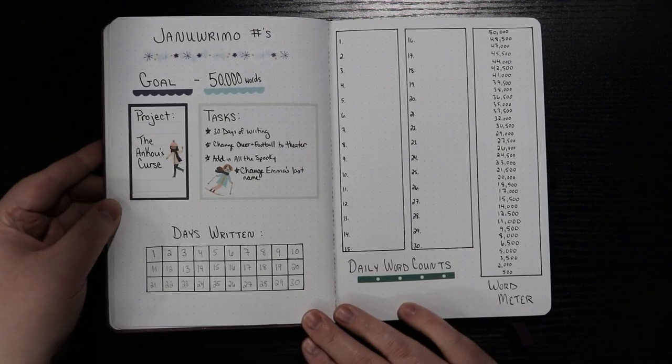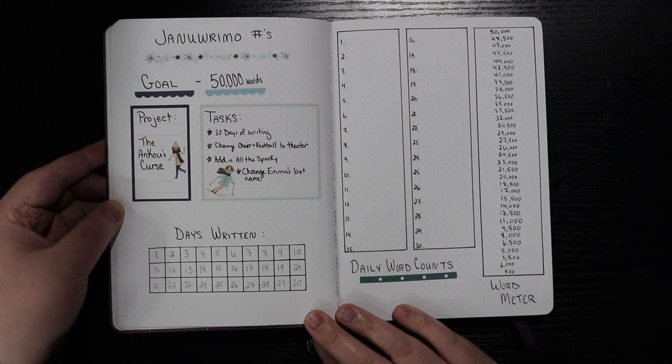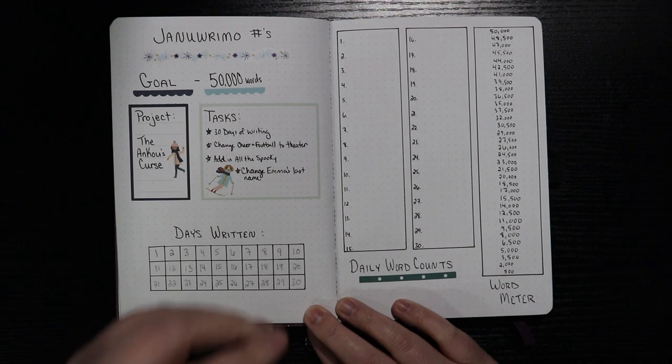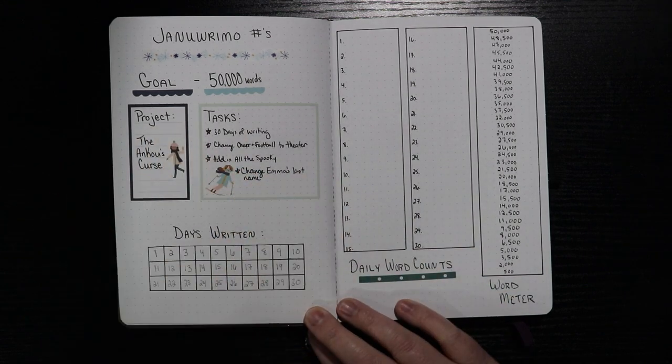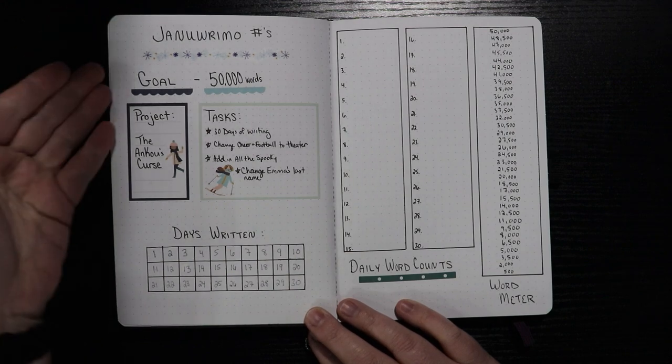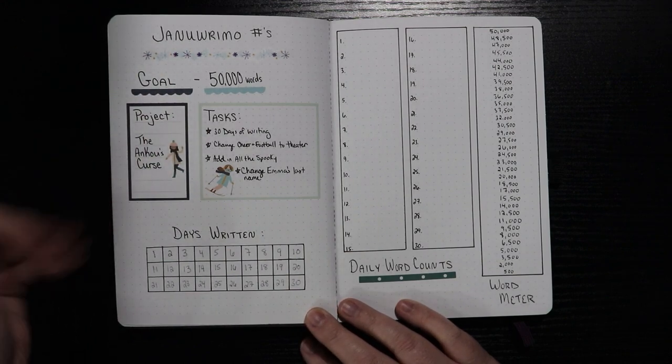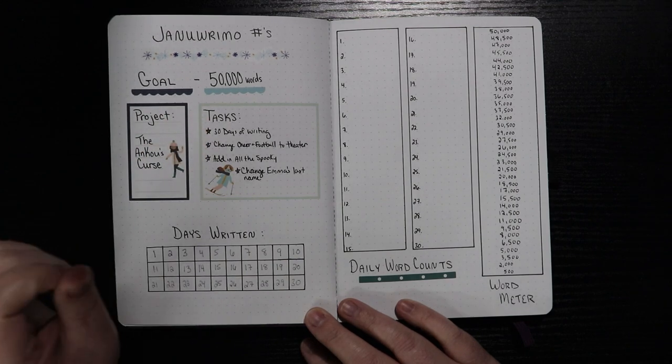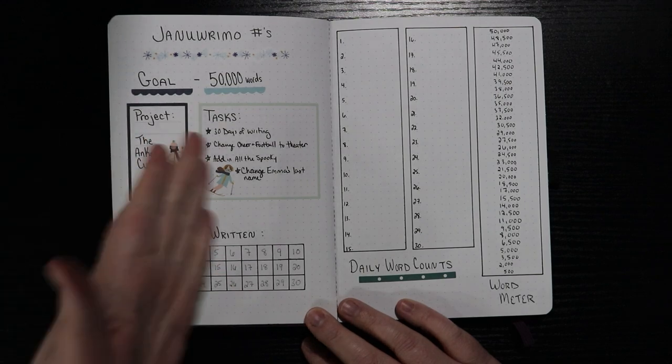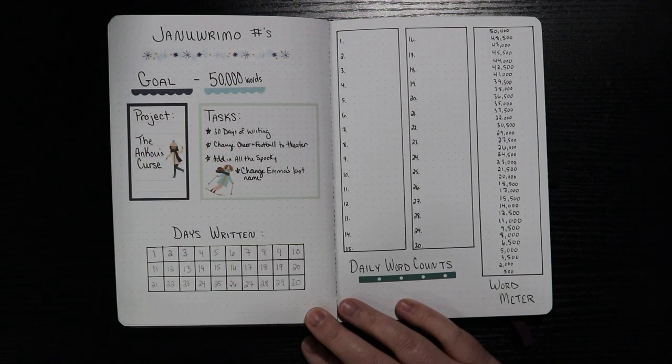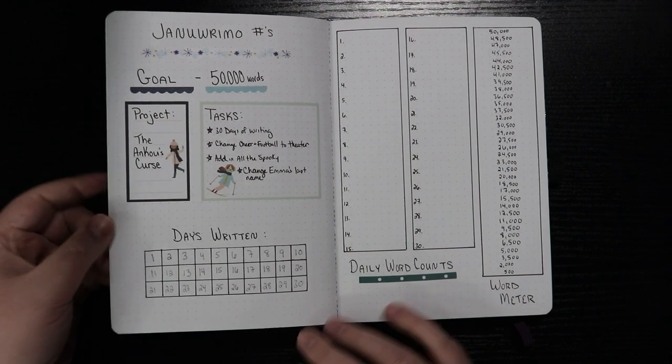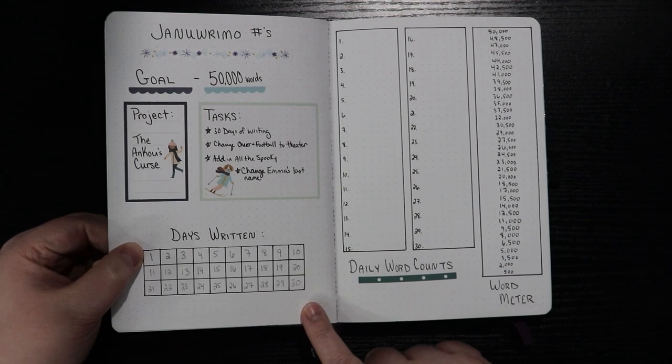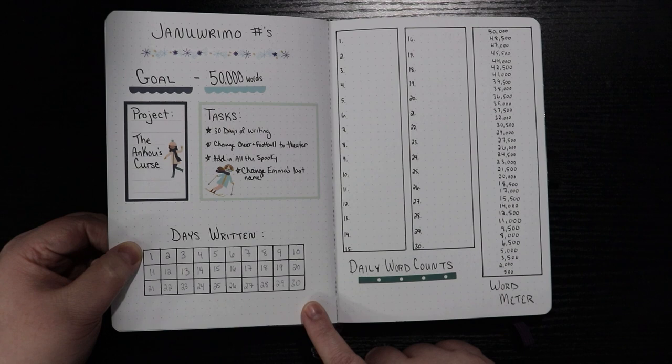In January, I will be doing JanuWriMo, which is NaNoWriMo but in January. So I'll be trying to get 50,000 words. What we're going to ignore is the fact that I continuously forgot that there were 31 days in January as I was doing this setup. So my numbers for JanuWriMo, my goal is 50,000 words. My project is The Anku's Curse. My tasks are 30 days of writing. Again, 31 days in January, but whatever. Change cheer and football to theater, add in all the spooky and change Emma's last name. Those are my tasks.